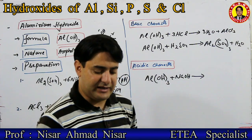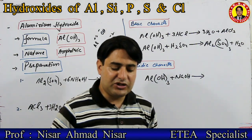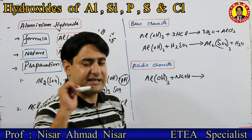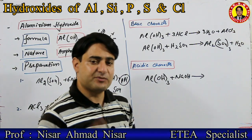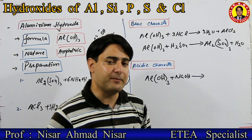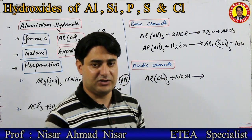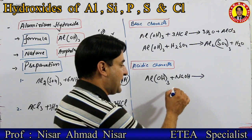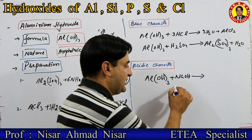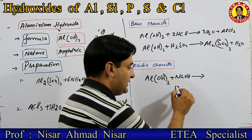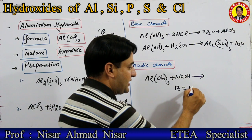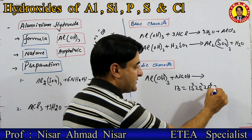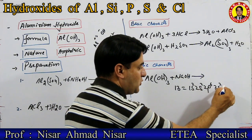Aluminate ion کیسے بنائے گا — اس بات کو سمجھنے کی کوشش کرتے ہیں۔ Aluminium کا atomic number ہوتا ہے 13 — electronic configuration ہوتی ہے 1s² 2s² 2p⁶ 3s² 3p¹۔ Aluminium کی outer/valence shell electronic configuration ہے: 3s² کا مطلب کیا ہے — 3s² اور 3p¹ کا مطلب یہ ہے —